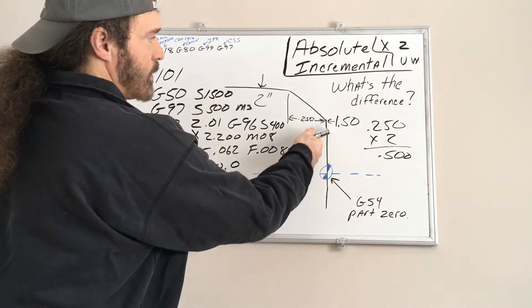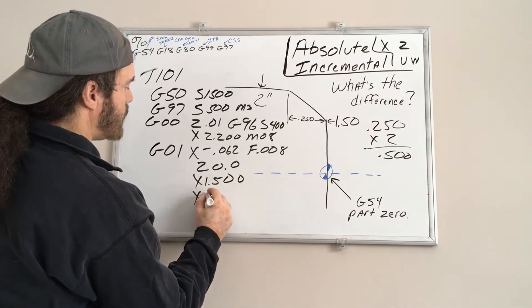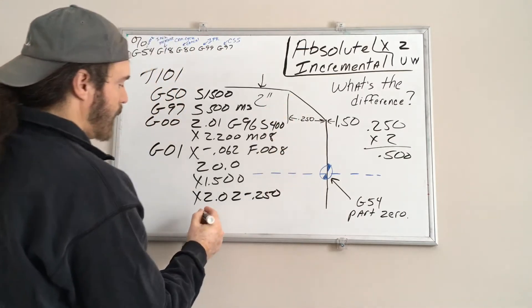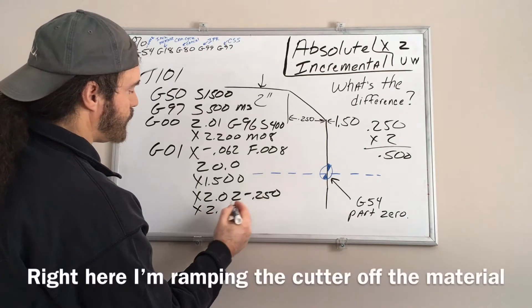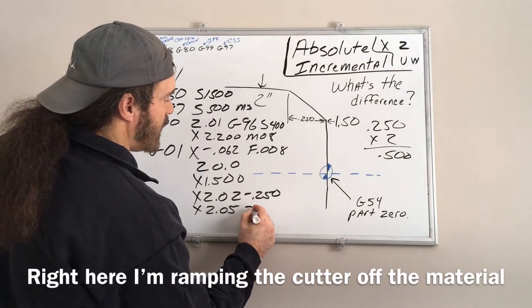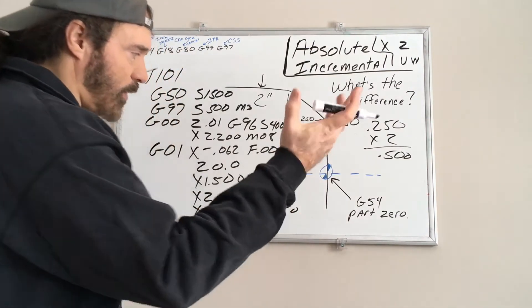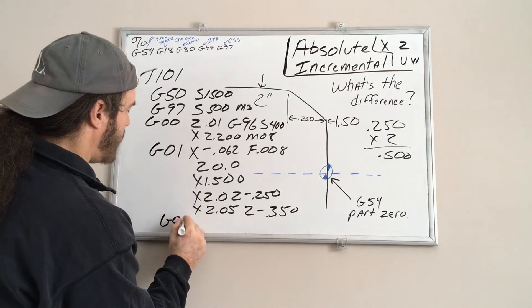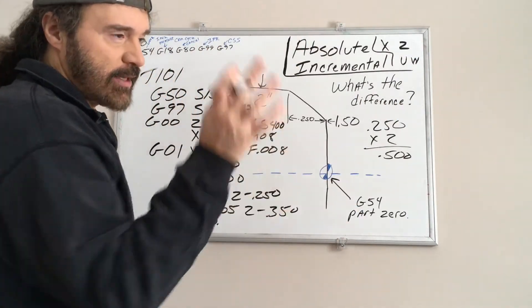Now let's feed down to X negative 0.62, feed rate of 8 thousandths per revolution. That's been explained in previous videos. Now we're going to feed into Z zero, and now we'll go up to X 1.5. Then we'll go X 2.0, Z negative 0.250. It'll keep the feed rate all the same. Then we'll just have it go off to X 2.050, which is 50 thousandths above the diameter of the part. We'll just go Z negative 0.350.